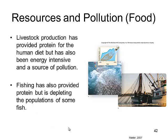Livestock production has provided protein for the human diet but has also been energy-intensive and a source of pollution. When we create fish farms, a lot of energy comes from the ecosystems in the area and they can be a big source of pollution. Maine banned shrimp fishing in 2014 because we fished them so much — the population was collapsing. If we didn't do it, we would have run out of shrimp.